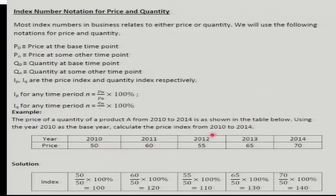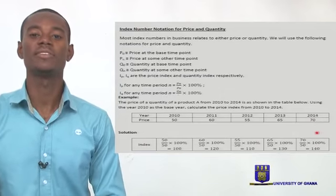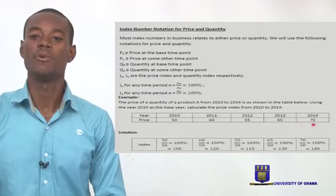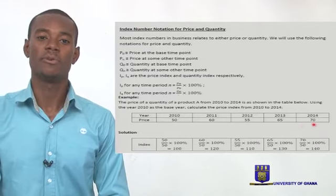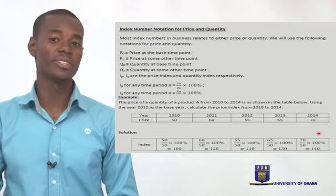The same logic applies throughout the other periods. For 2014, the price is 70, the base price is still 50. So we have 70/50 × 100 = 140. This tells us there has been a 40 percentage point change in price between 2010 and 2014. Very basic stuff.